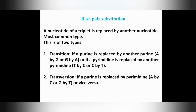In the transition form of base pair substitution, a purine is replaced by another purine, or a pyrimidine is replaced by another pyrimidine — no interchange is allowed. In transversion, interchange is allowed: a purine is replaced by a pyrimidine or a pyrimidine is replaced by a purine.